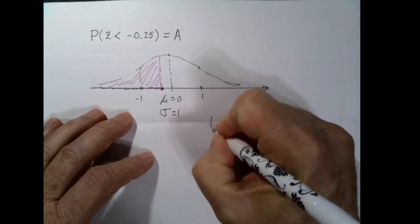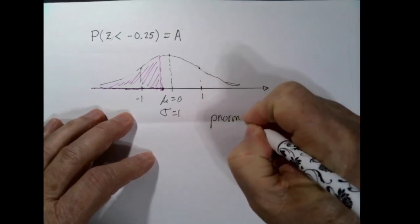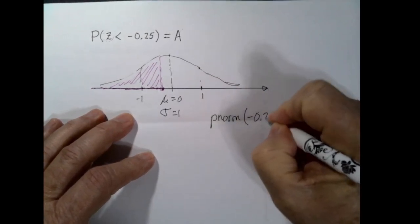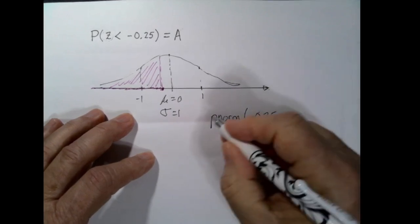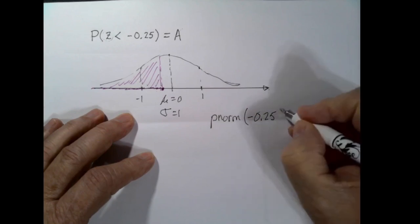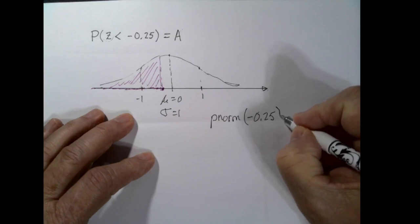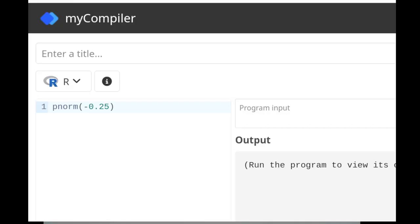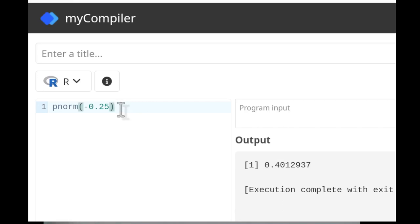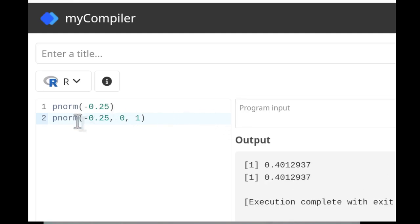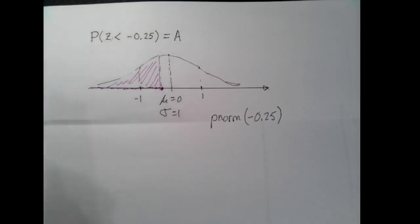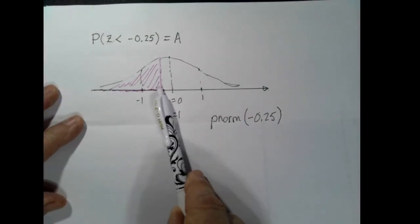Luckily, the function pnorm in R is built to do this job. pnorm(-0.25) — since this is a standard normal distribution, you don't even have to specify the mean and standard deviation. You can just ask R to do that. When I run that script, I get a particular value. If we run pnorm(-0.25, mean=0, sd=1), that gives the same result. For any distribution other than standard normal, you would need to state the mean and standard deviation. That's exactly what pnorm does — it finds the area below a particular value.